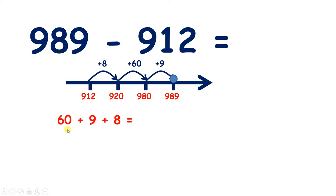So we added 60, 9, and 8. 9 plus 8 is 17. And if we add 17 to 60, we get 77. So 989 minus 912 equals 77.